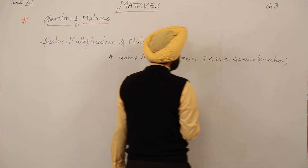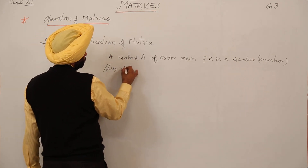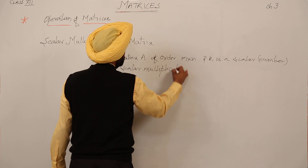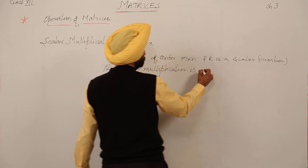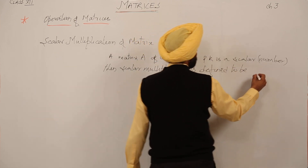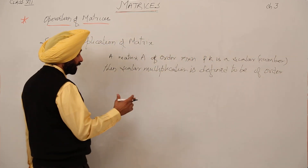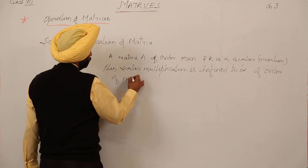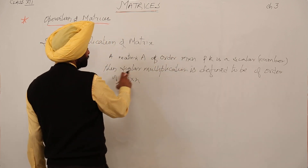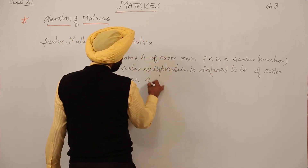Given matrix A of order m×n and k is a scalar number, then scalar multiplication is defined to be of order m×n. This means we are not changing the order — if the order is m×n here, it is also m×n after scalar multiplication. So scalar multiplication produces a matrix of the same order m×n.